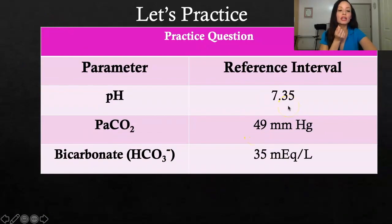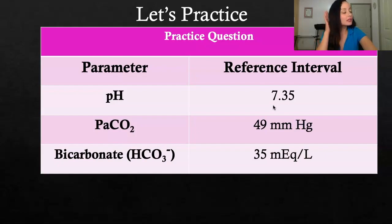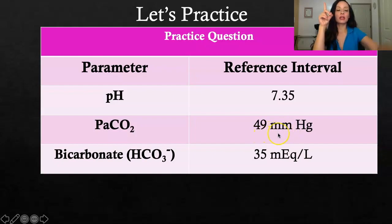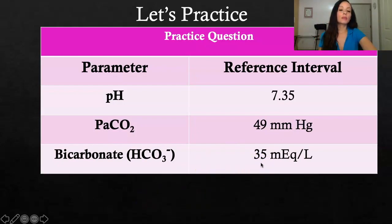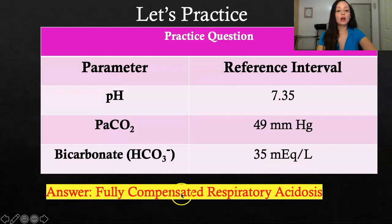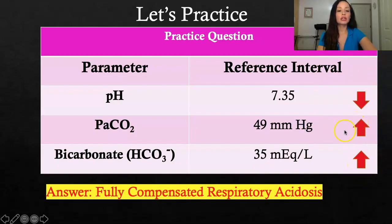Practice question three: pH is 7.35. Even though it's within normal range, since it's less than 7.4 we treat it as acidosis. CO2 is elevated above 35 to 45. Bicarb is also elevated above 22 to 26 — this is where the body has been able to fully compensate. So it's fully compensated respiratory acidosis: CO2 is high, bicarb is high, and pH is on the low side within normal range.